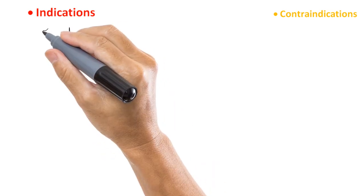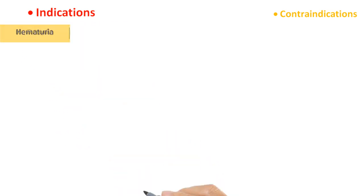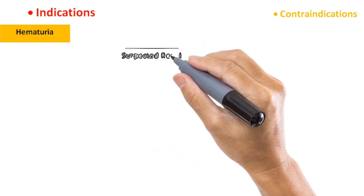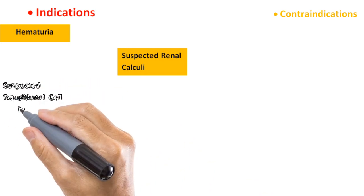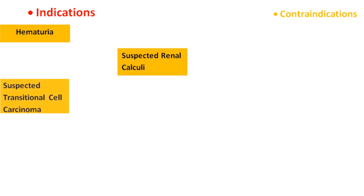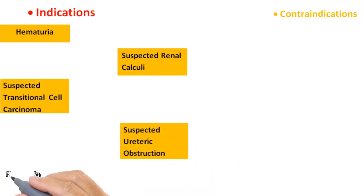That takes us to the indications for IVU. It is performed in cases of hematuria — the presence of blood in the urine — suspected cases of renal calculi, also known as kidney stones, the formation of hard mineral deposits in the kidneys, suspected transitional cell carcinoma, a cancer that affects the urinary system, suspected obstruction of the ureters, and pain in the lower sides of the back, called the flank.